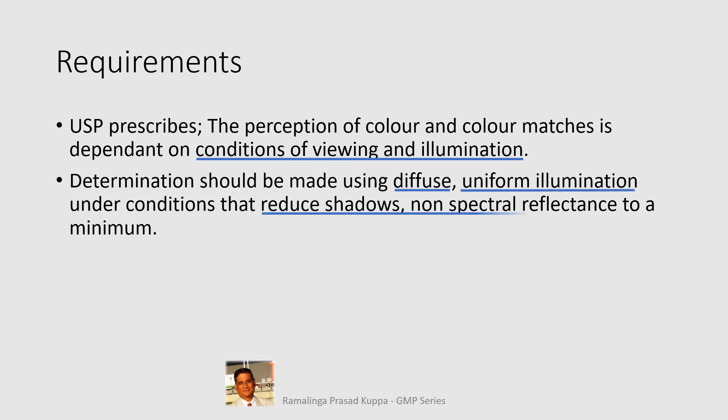Determination should be made under conditions that reduce shadows and non-spectral reflectance to a minimum. Diffused light is the brightness caused by indirect reflection of sun rays — it is not the direct sunlight outside on a bright sunny day. Since laboratories operate in closed areas, adequate diffuse light may not be available. Equivalent light can be obtained using an electric lamp with white light, focused vertically onto the material. Shadows and non-spectral reflectance should be restricted to a minimum.